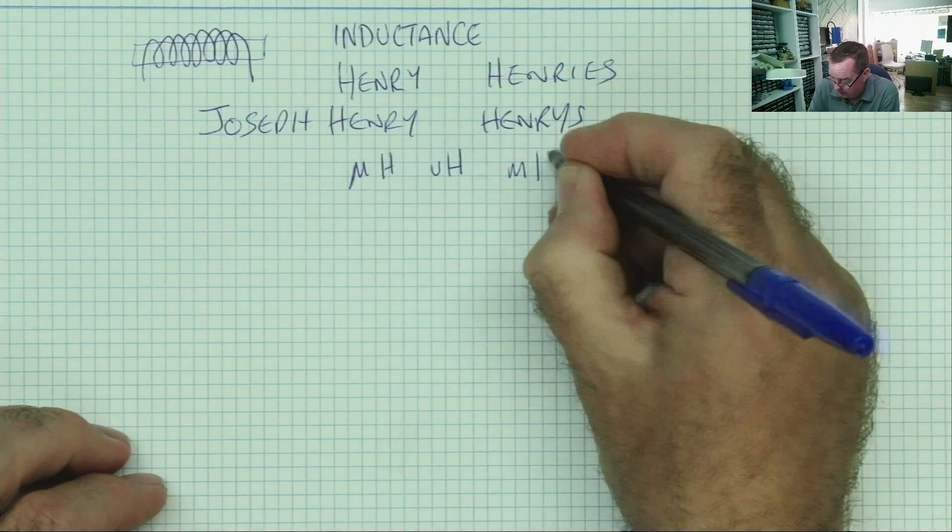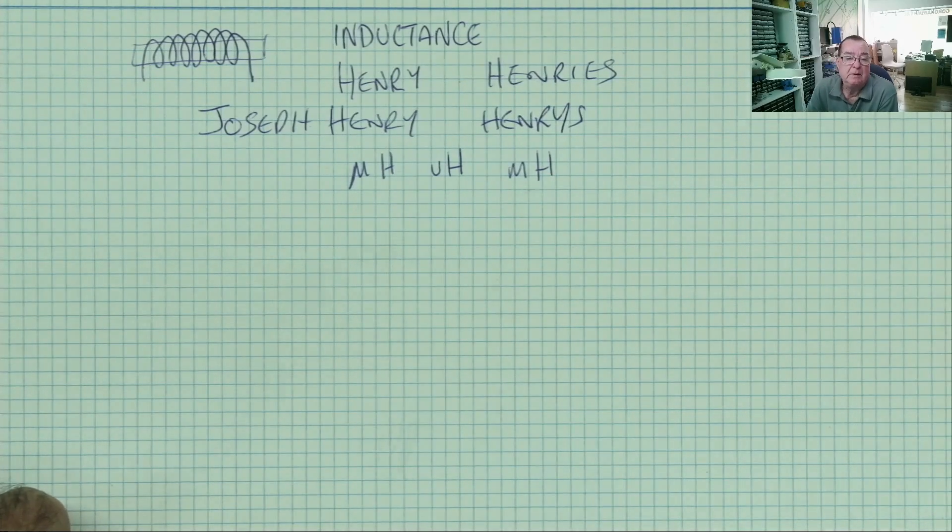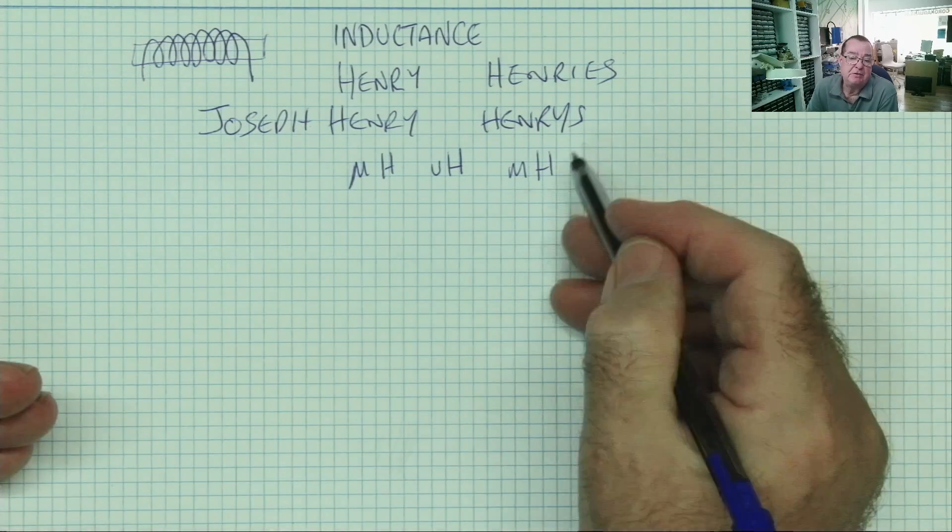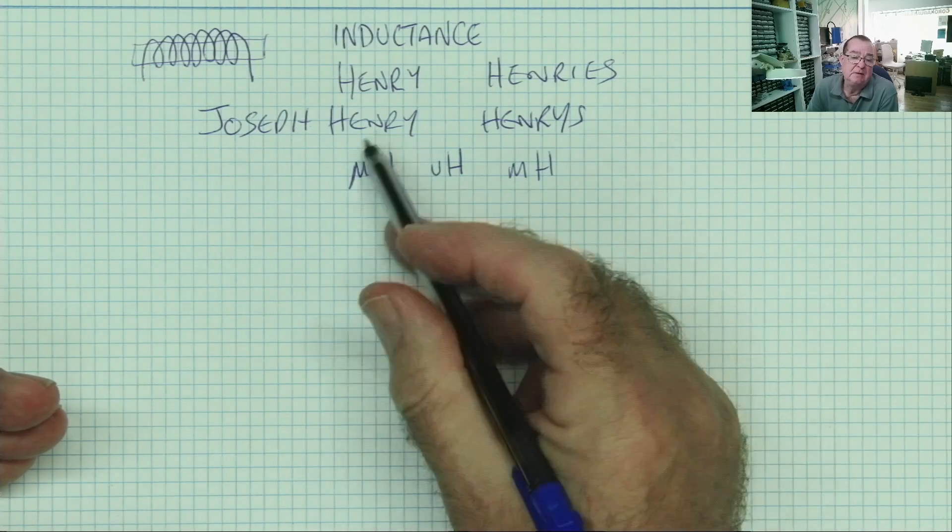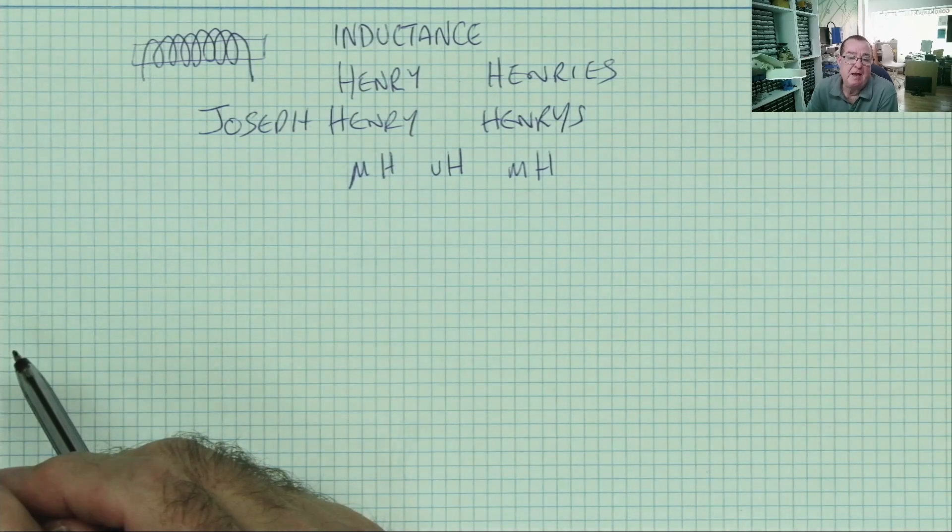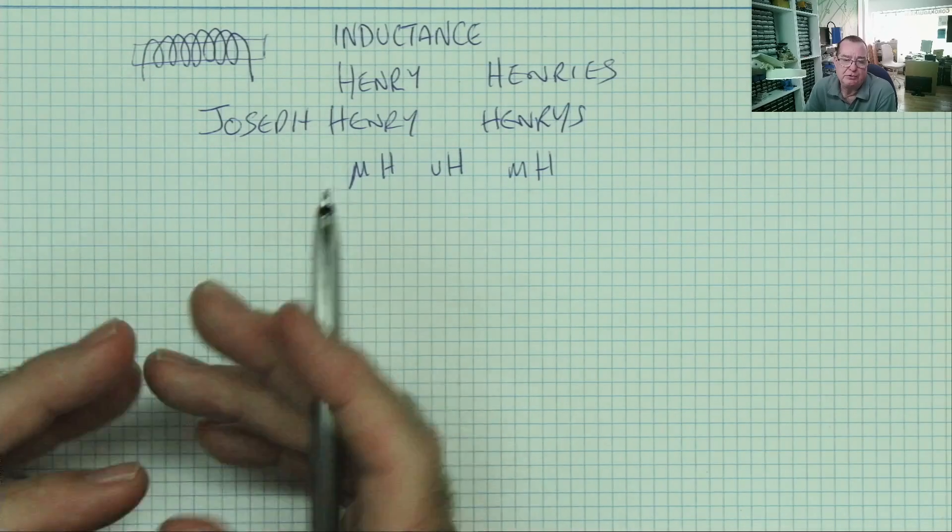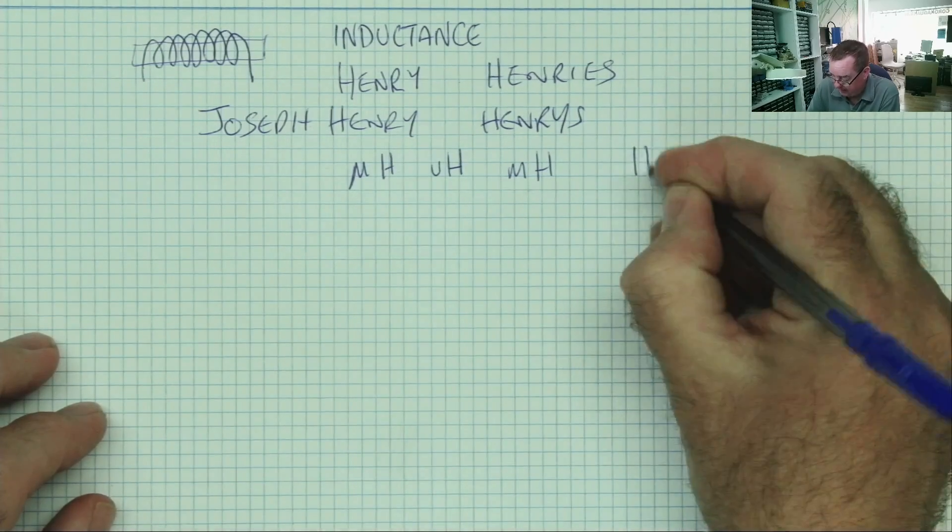And also, milli-Henrys. A thousandth of a Henry. So this is one thousandth of a Henry. This is a millionth of a Henry. But you will find quite large inductors, which are actually in Henrys.